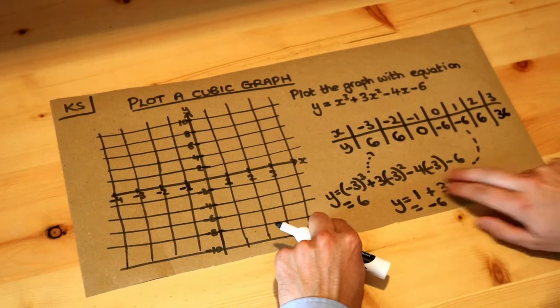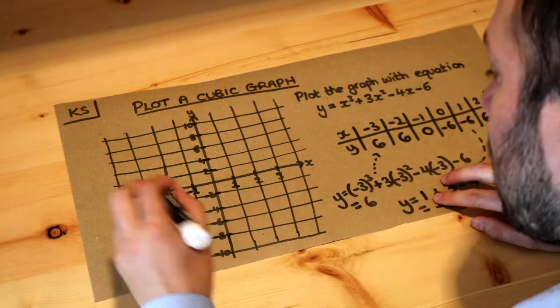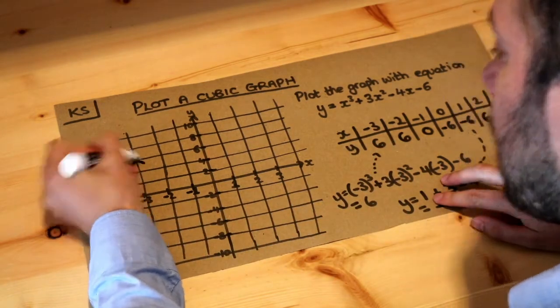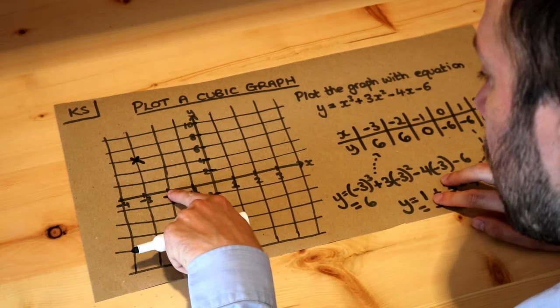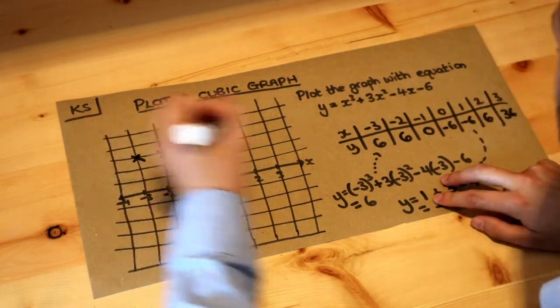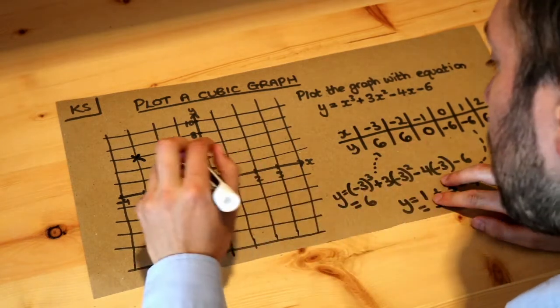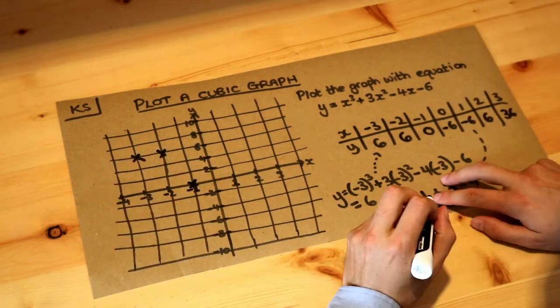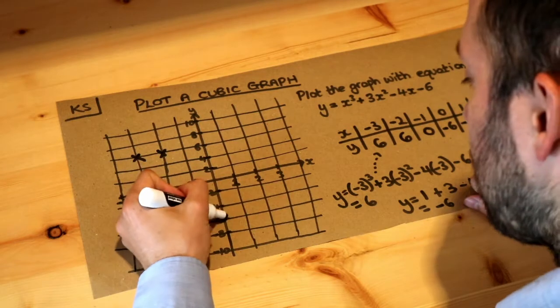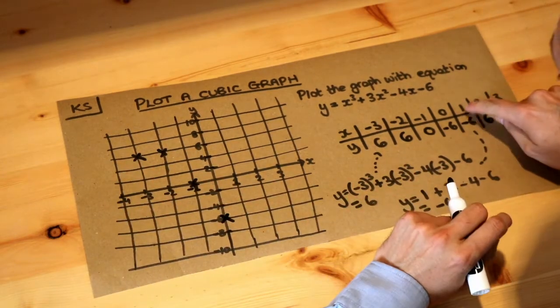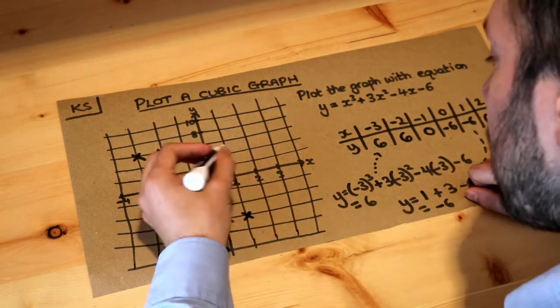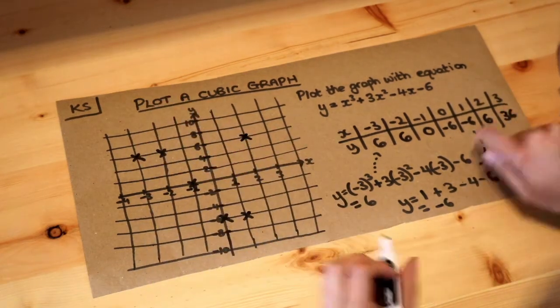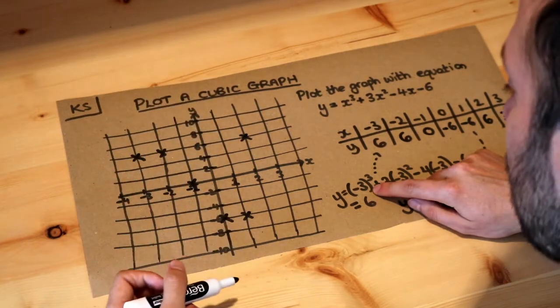So let's now plot these various values. When x is minus 3, y is 6, so minus 3, 6 is there. When x is minus 2, y is 6, so minus 2, 6. When x is minus 1 we get 0 as y. When x is 0 we get minus 6. When x is 1 we get minus 6 again. When x is 2 we get 6, and then when x is 3 we get 36 which is way too high.